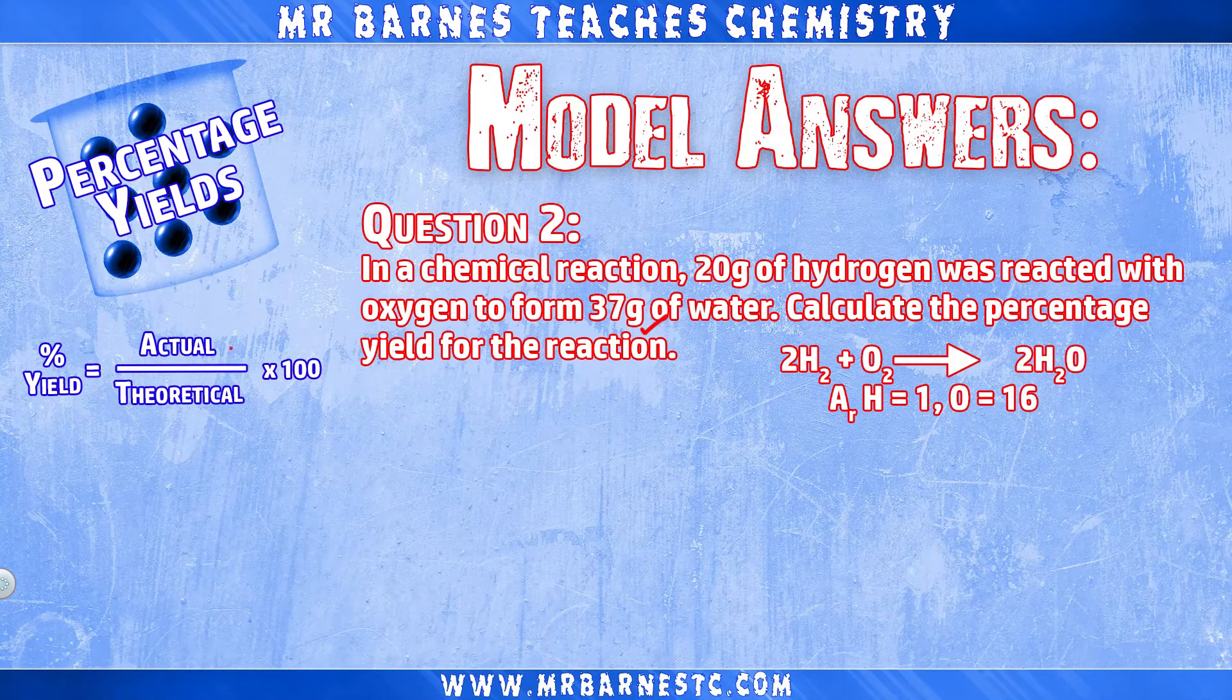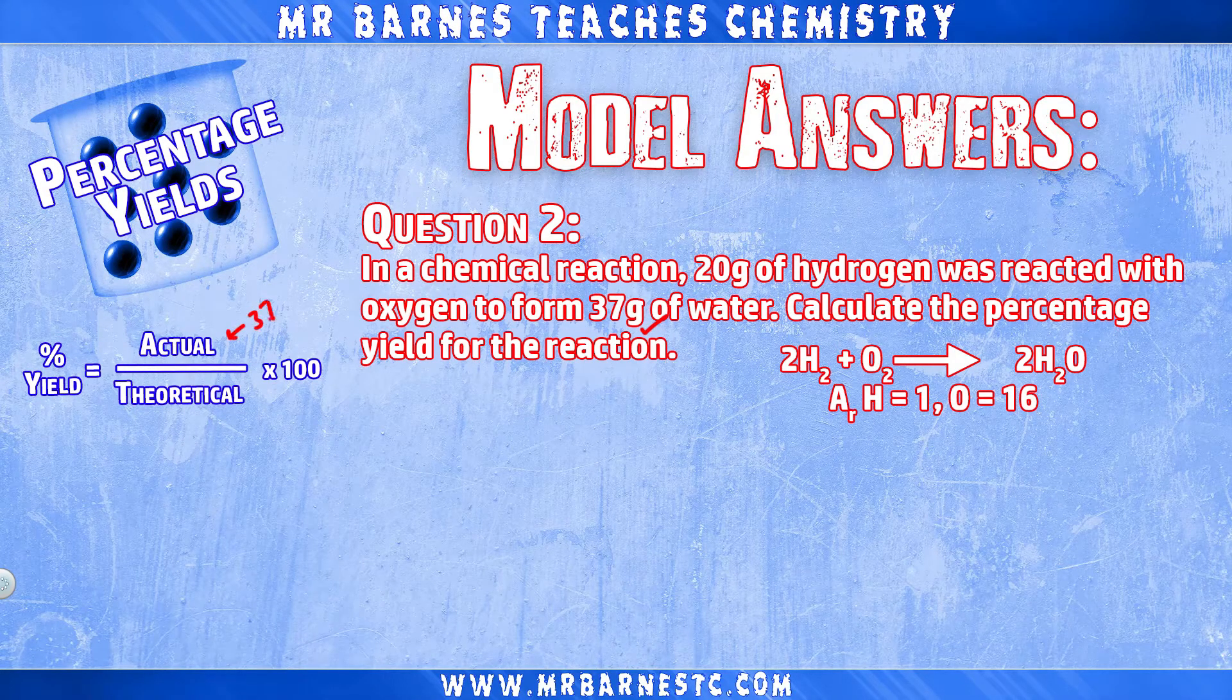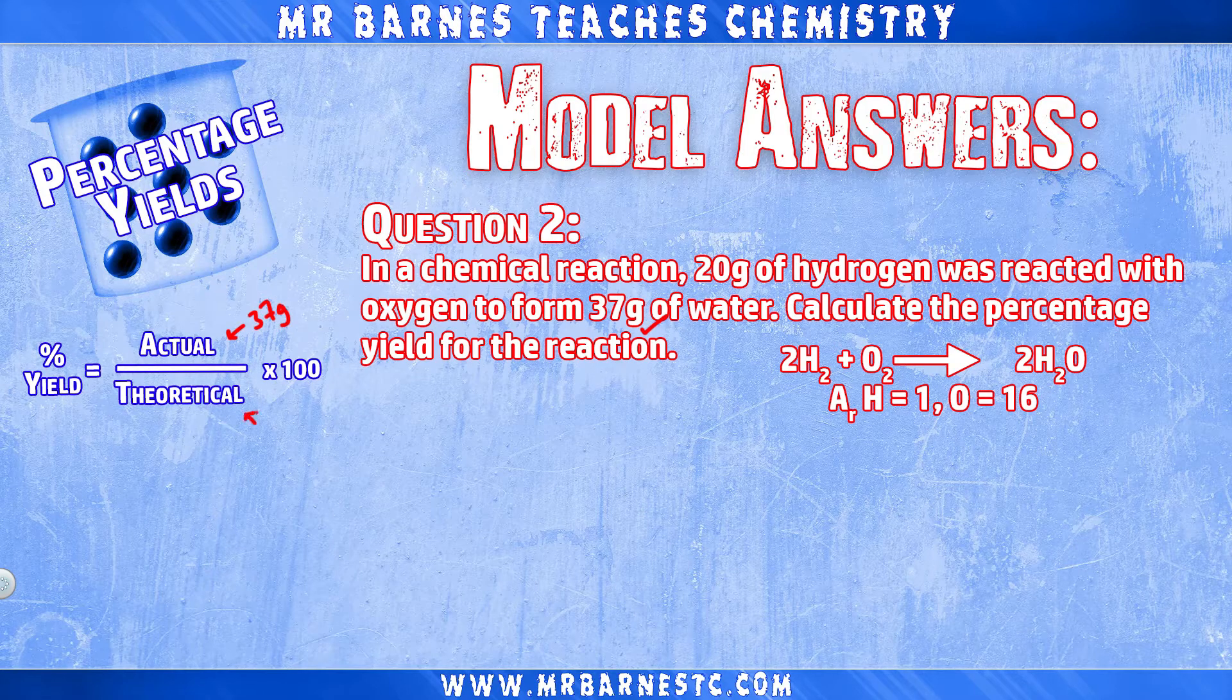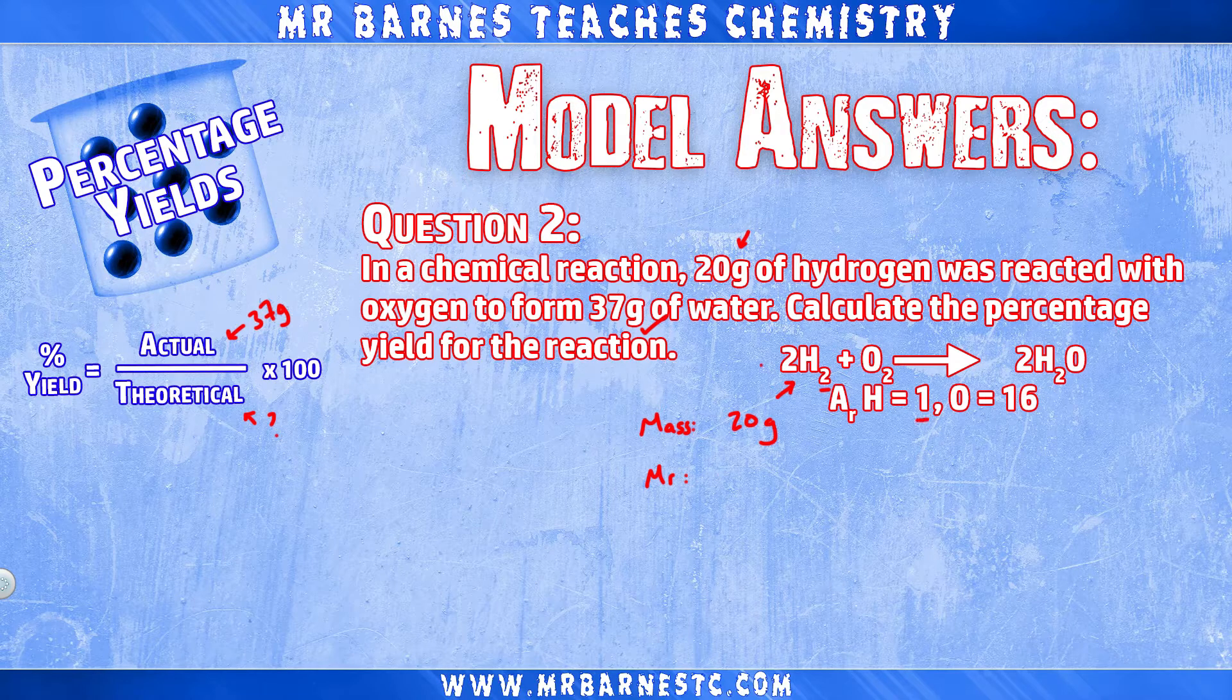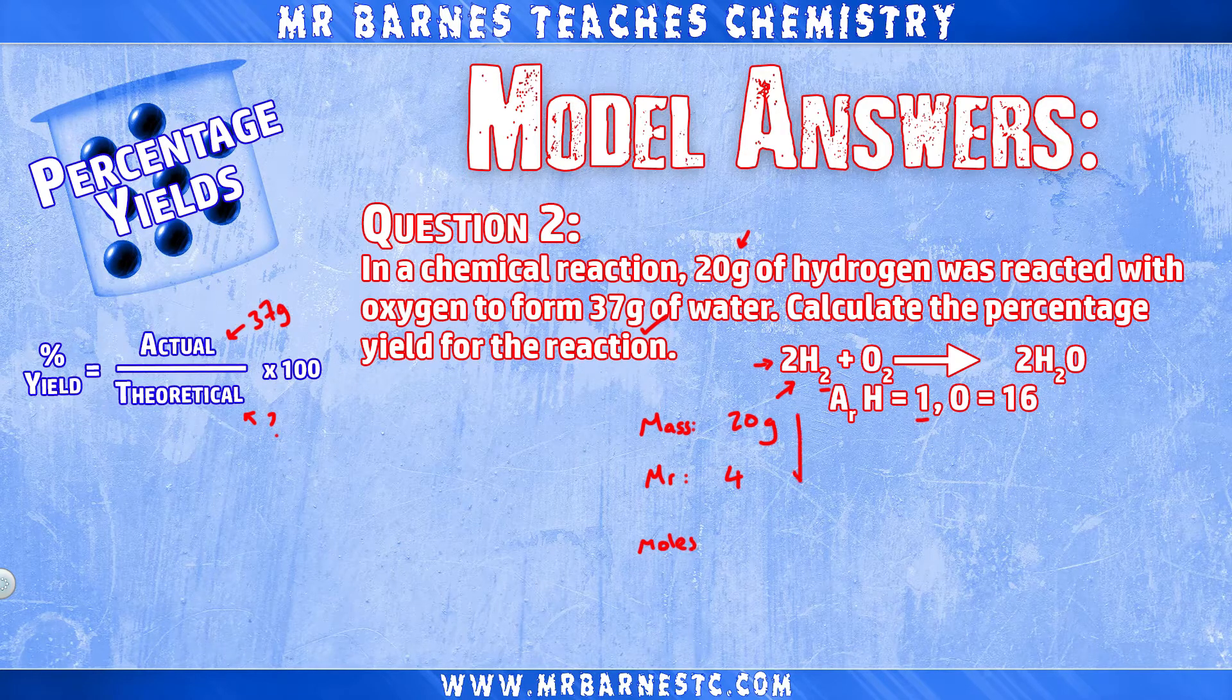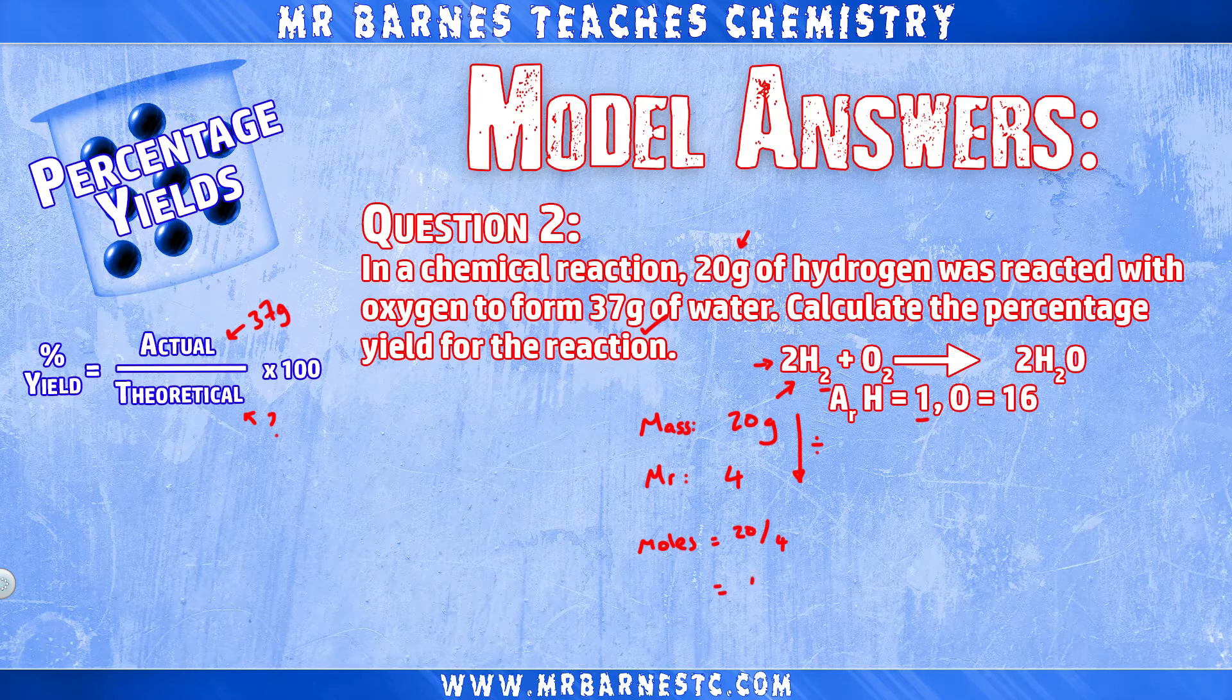Onto question two. So it gives us the actual yield of 37 grams, but we haven't got a theoretical yield, so we've got to work it out. Now, we've been given an initial mass of 20 grams for hydrogen, so we can work out the formula mass as well, which is two lots of two hydrogens, so four in total, giving us a formula mass of four. We can therefore work out the moles of hydrogen, which is 20 divided by four, which is five moles.